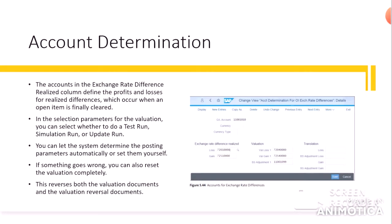There is an account for realized losses and gains — differences which occur when an open item is finally cleared. In the selection parameters for the valuation, you can select whether to do a test run, simulation run, or update run. You can let the system determine the posting parameters automatically or set them yourself. If something goes wrong, you can also reset the valuation completely, which reverses both the valuation documents and the valuation reversal documents.